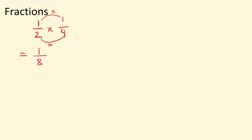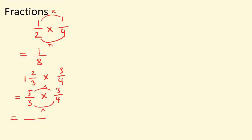But it gets complicated when we have mixed numbers. Say for example, we have one and two thirds multiplied by three quarters. Before you multiply fractions, you need to change the mixed numbers into an improper fraction first. So three times one is three, add two is five — five over three. Multiply by three quarters; that fraction is already in good form, not a mixed number. So five times three and three times four: five times three is 15, three times four is 12.